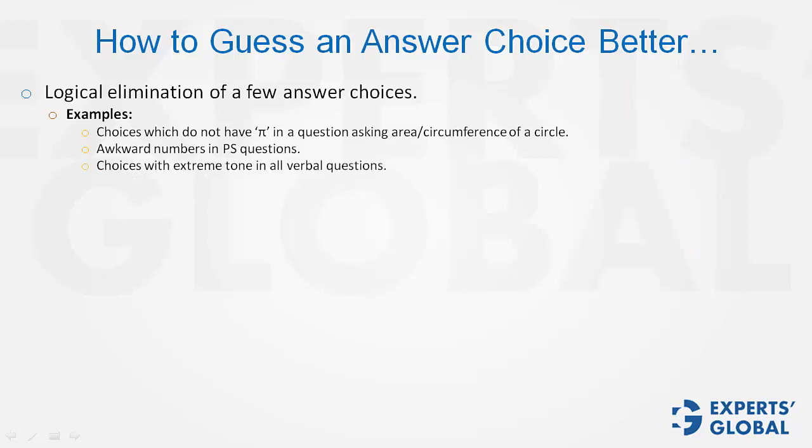Choices with extreme tone in all verbal questions can be eliminated. GMAT has a moderate business communication-like tone and content that would not hurt anybody with any cultural or social background, and therefore any answer choice that tends to have an extreme tone is likely to be incorrect.